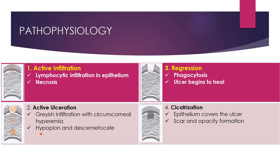If the ulcer progresses further, it can damage the stroma and cause the Descemet's membrane to protrude outward in order to restrict corneal perforation — a condition called descematocele. If the ulcer is not treated at this stage, it may lead to corneal perforation.